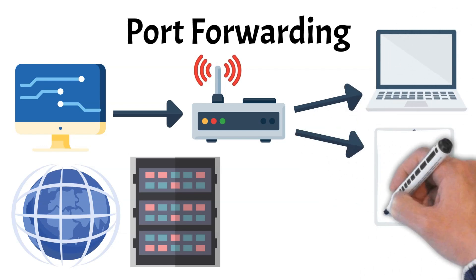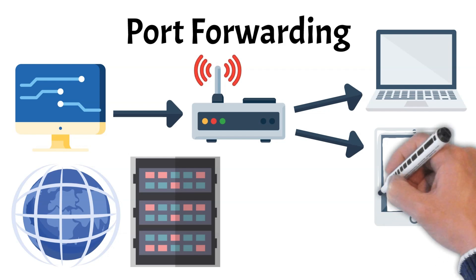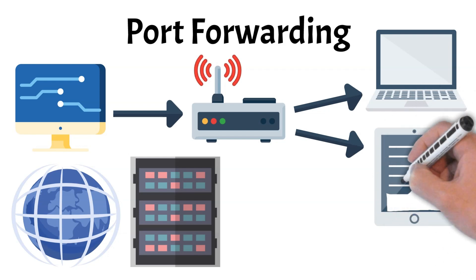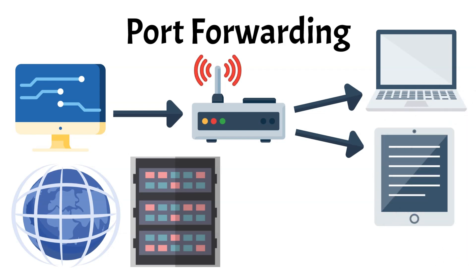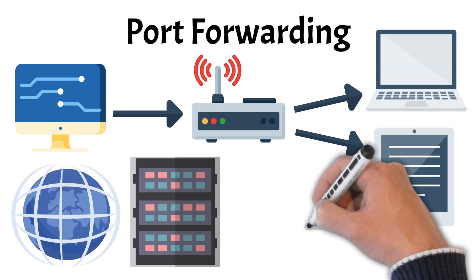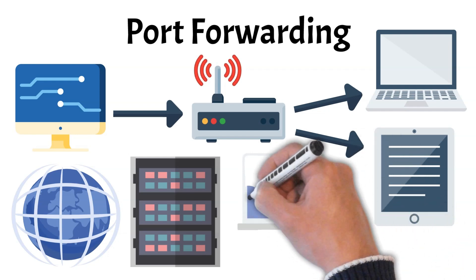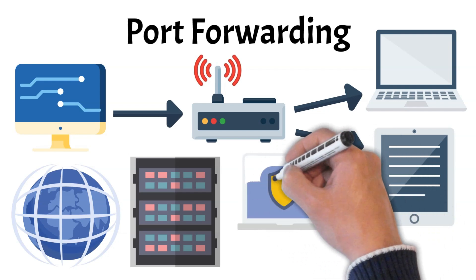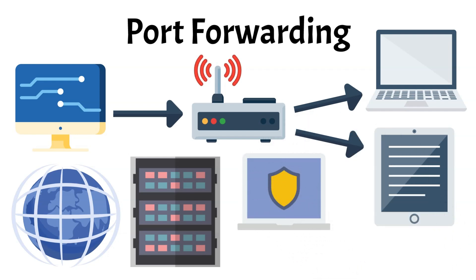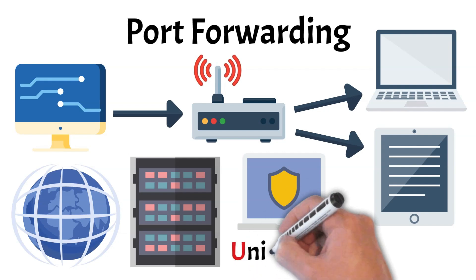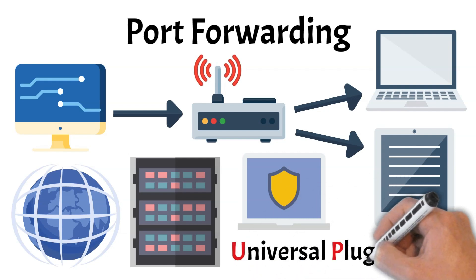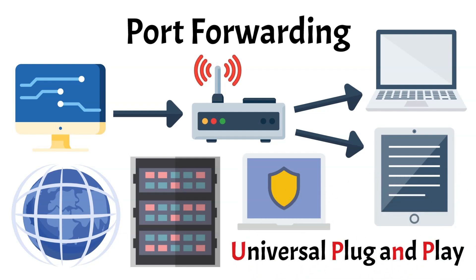However, improper configuration can expose a network to security risks, making it important to forward only necessary ports and use firewalls for protection. Many routers offer manual port forwarding settings, while UPnP — Universal Plug-and-Play — can automate the process for some applications.